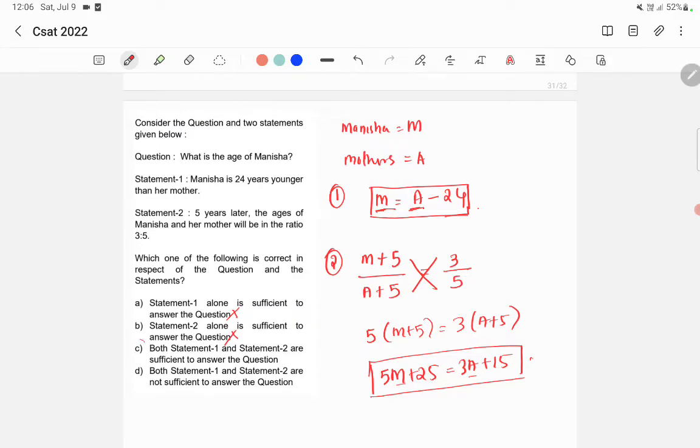So option C is the correct answer. If you take both statements, you are able to find the answer. The thing you need to understand is that you don't need to find out the age of Manisha. You just need to check whether it is possible to find the age.